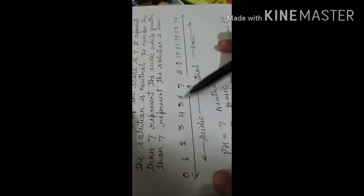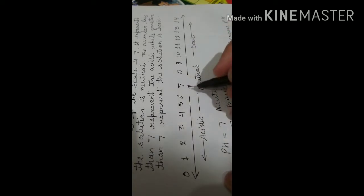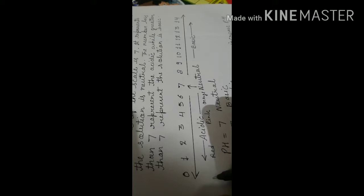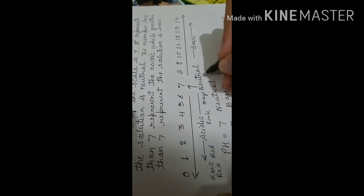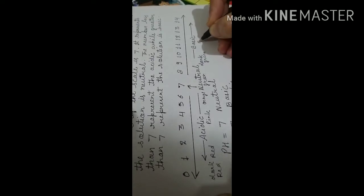Here I have made a pH scale for you. Values start from 0 and go up to 14. Number 7 shows the solution is neutral. If the value is less than 7 the solution is acidic, and if it is more than 7 the solution is basic. As pH decreases the color changes to orange, then pink, then red, and at the lowest pH value it becomes maroon or dark red. At neutral the color is green, then dark green, then blue, and at the highest pH value it becomes violet.